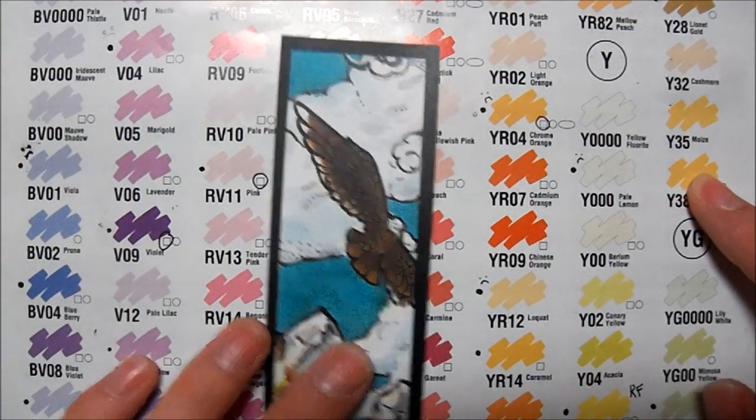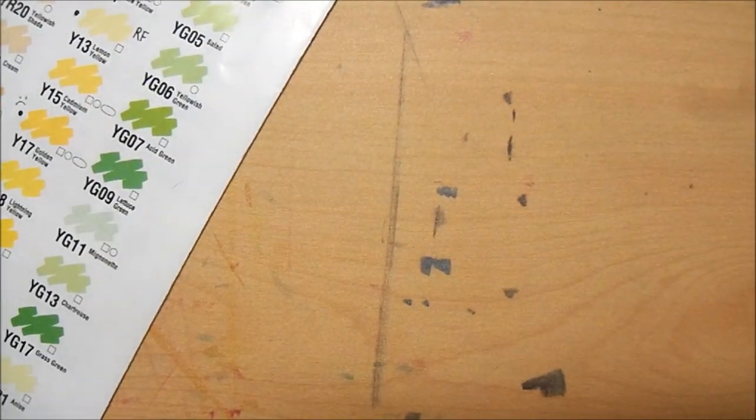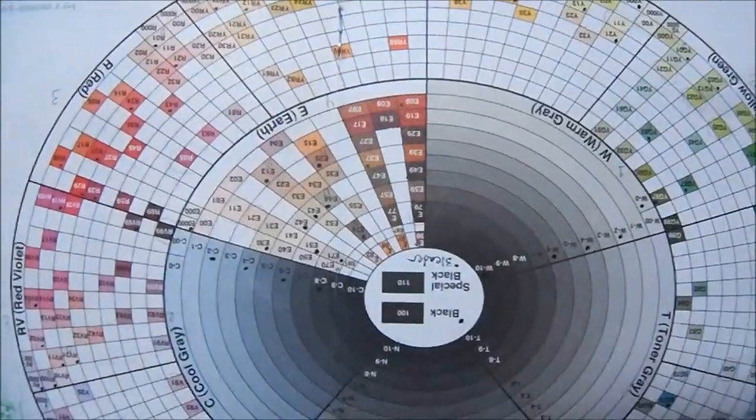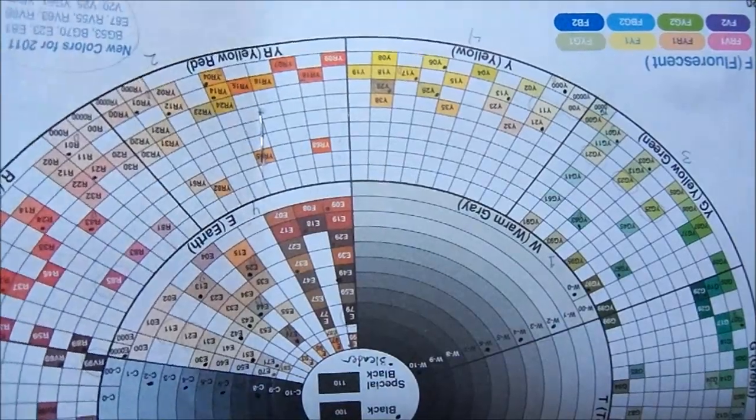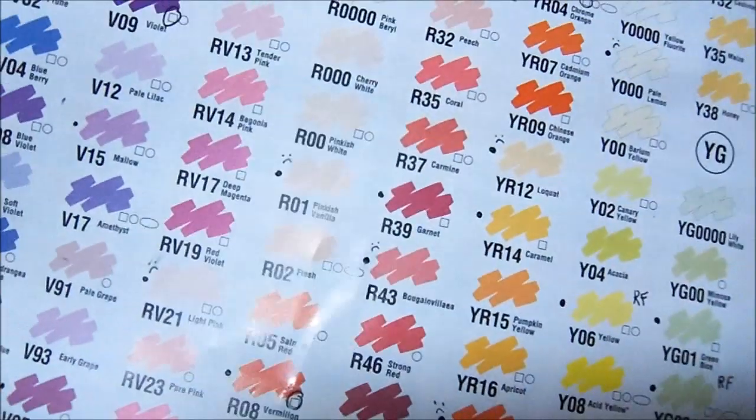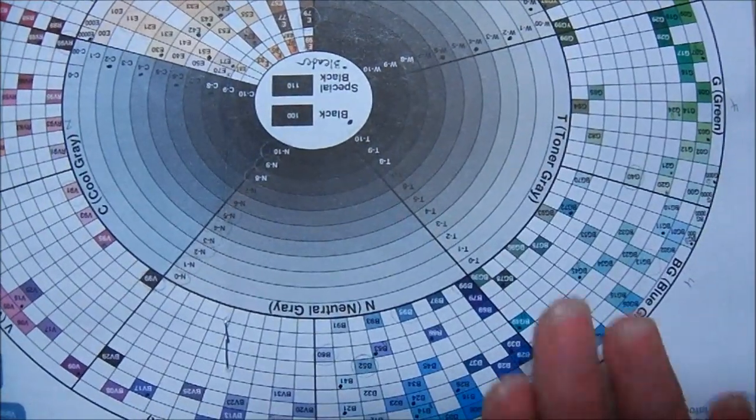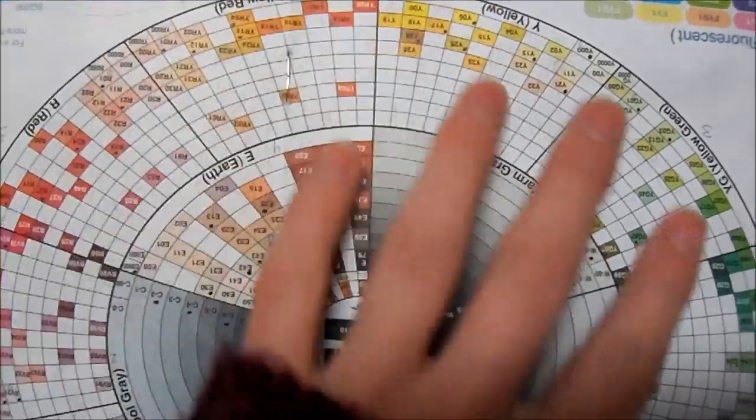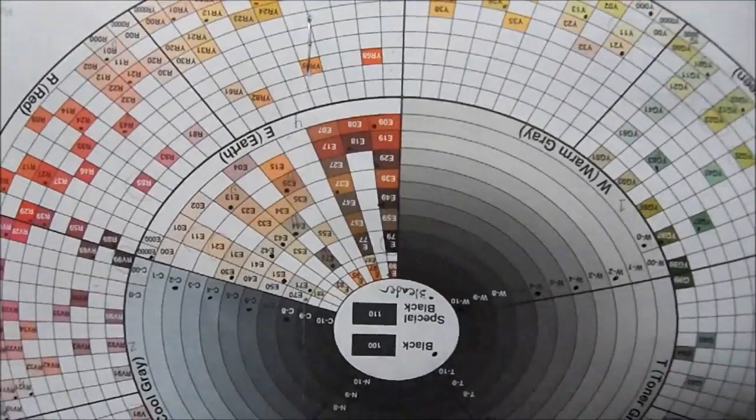And then there's also the Copic color wheel which is right here. This is the color wheel version of this basically. I use this when I'm picking out new markers to see where my Copic marker collection needs balance. Basically it's a color wheel and a marker list all in one.